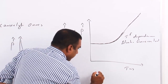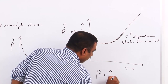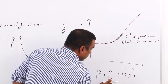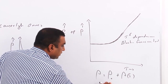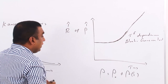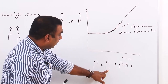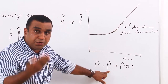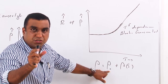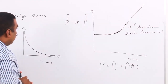The resistivity consists of two parts: ρ = ρ₀ + ρ(T), a temperature-independent part and a temperature-dependent part. The temperature-independent part ρ₀ is due to the impurities or imperfections present in the crystal.